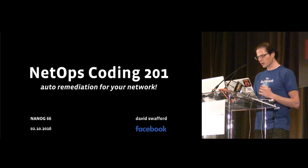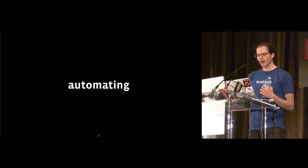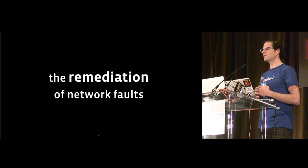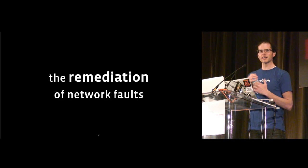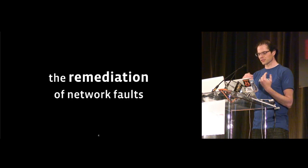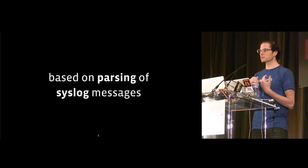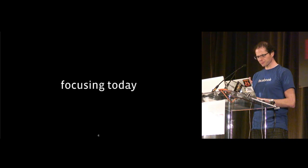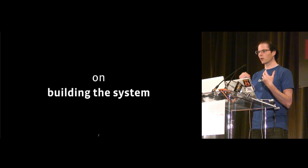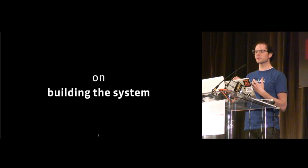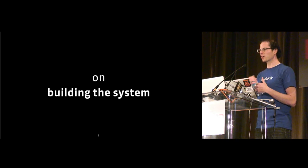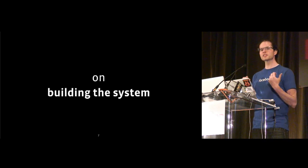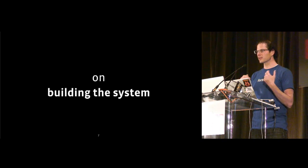Today is the 201 session. We're going to continue with our theme of automating the detection and remediation of network faults. If you were in yesterday's session, you learned about the initial portion of this — for example, parsing syslog messages with regular expressions. We're not going to be thinking about regular expressions anymore today. We're going to be looking at another side of this, focusing on building a system modeled after something we use at Facebook called FBAR.